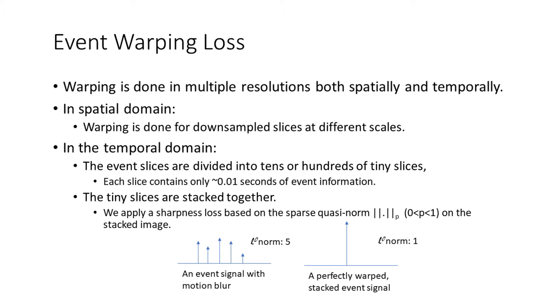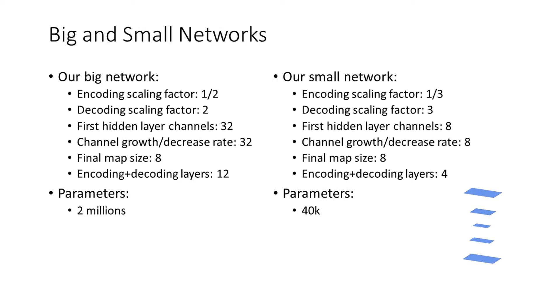Our architecture lends itself for implementations in small networks. We trained a big and a small network. The small network uses a significantly larger feature scaling factor and fewer channels. It has one-fiftieth of the parameters and a third of the depth. Nevertheless, due to the use of multi-level information, it produces good quality predictions.